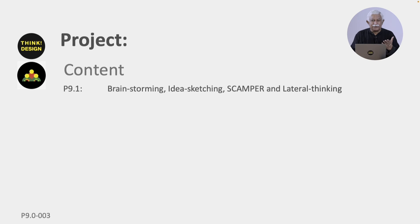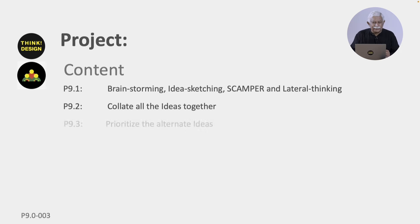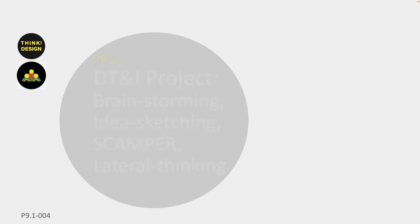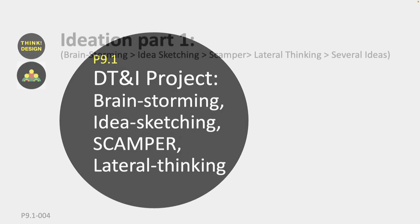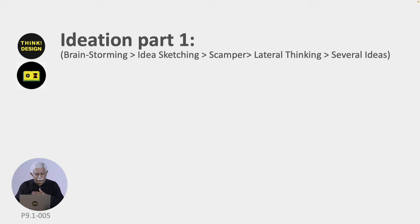The content covers brainstorming, idea sketching, SCAMPER, and lateral thinking. We then collate all the ideas together in this section and prioritize the ones which you think are good. We will do these 4 things in the project, and each one builds upon the other so that you get a bunch of several ideas.